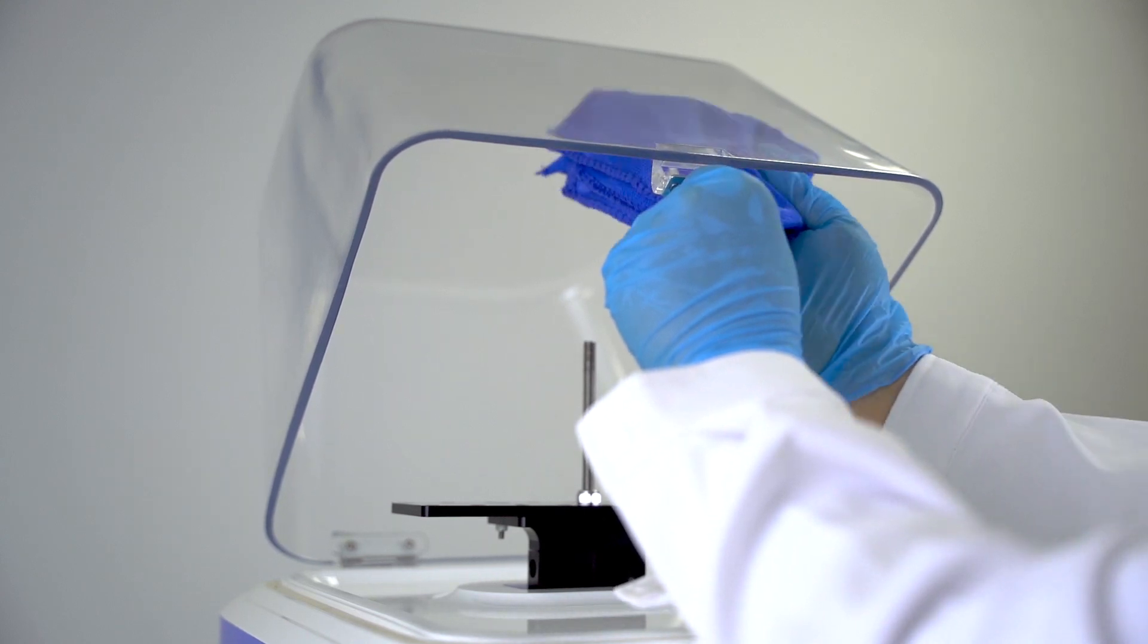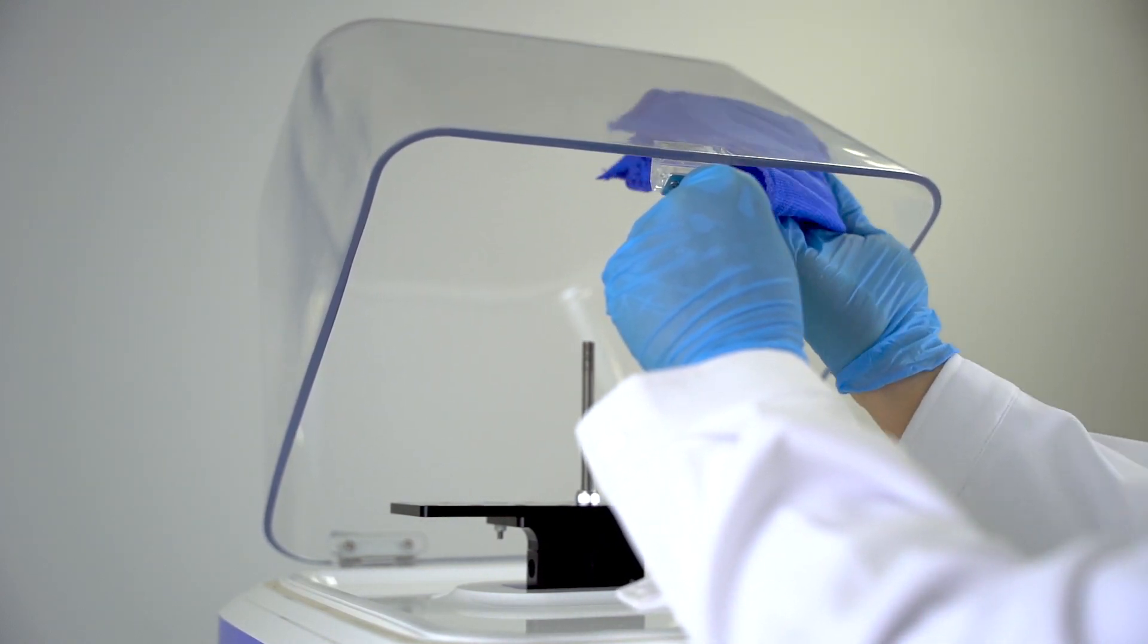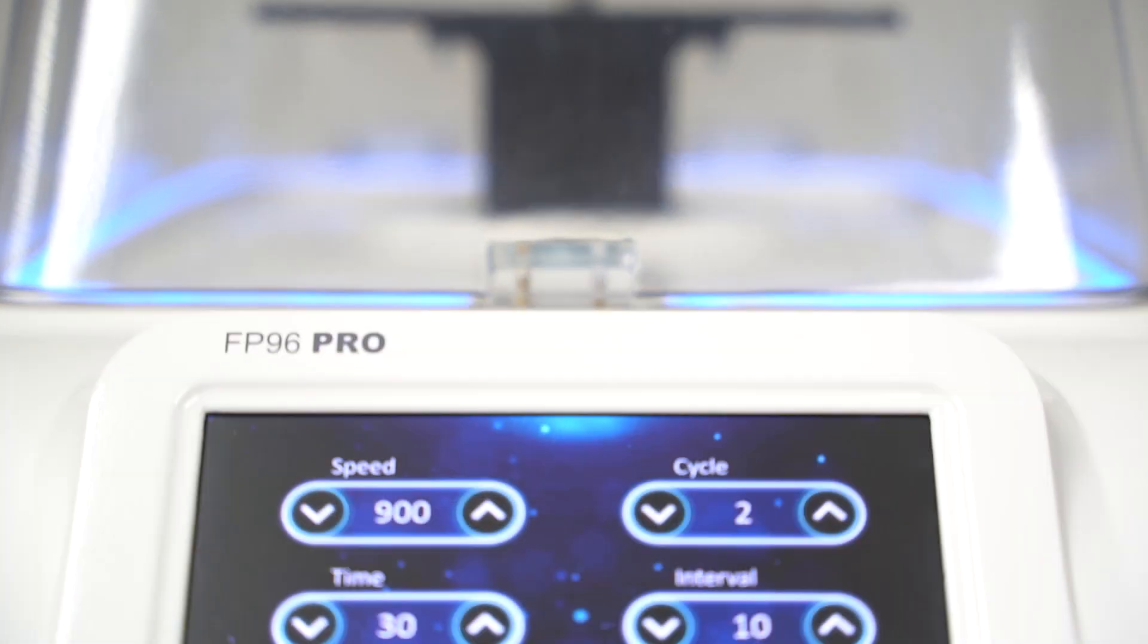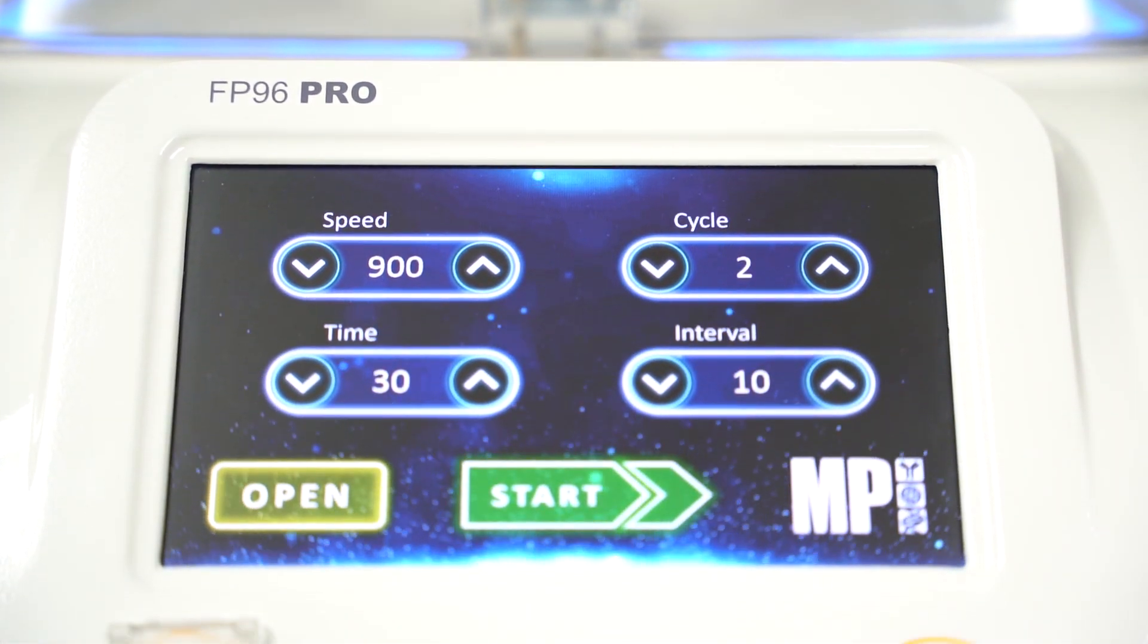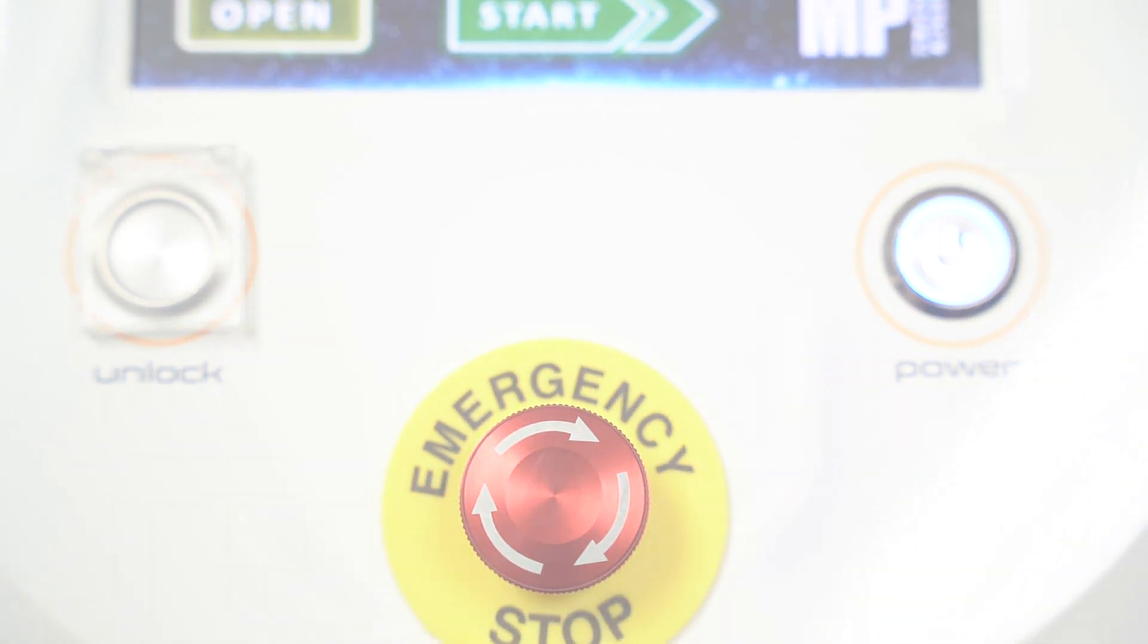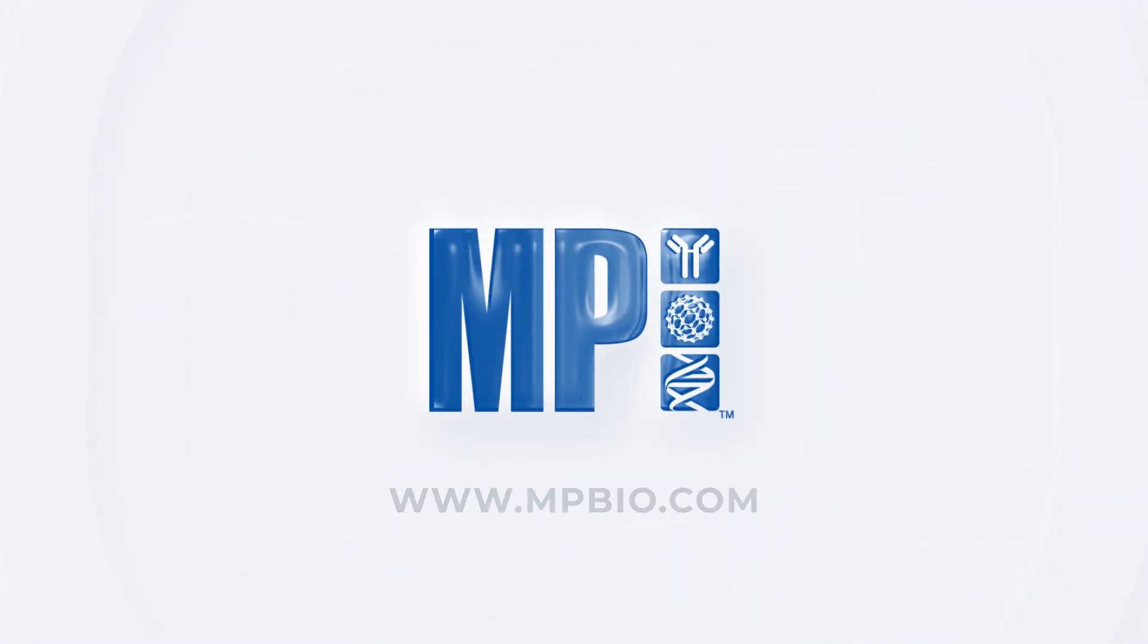Make sure to dry the FastPrep 96 PRO thoroughly before using it again. Thank you for choosing FastPrep 96 PRO, the future of high-throughput homogenization. For more information, contact us at www.mpbio.com.